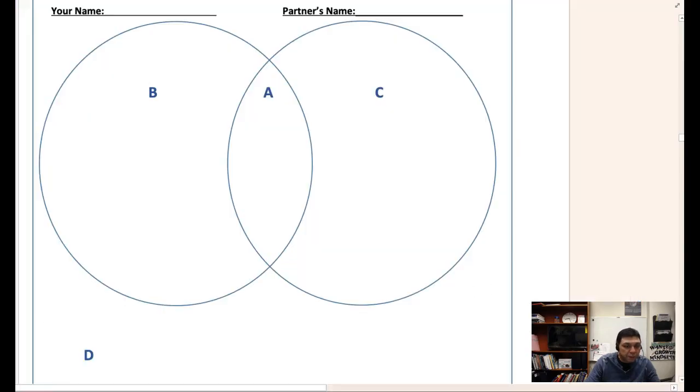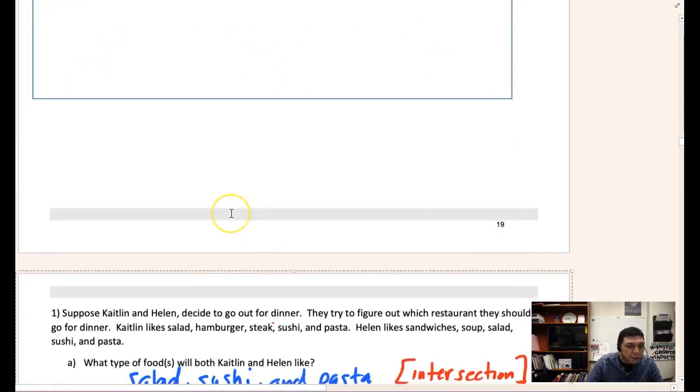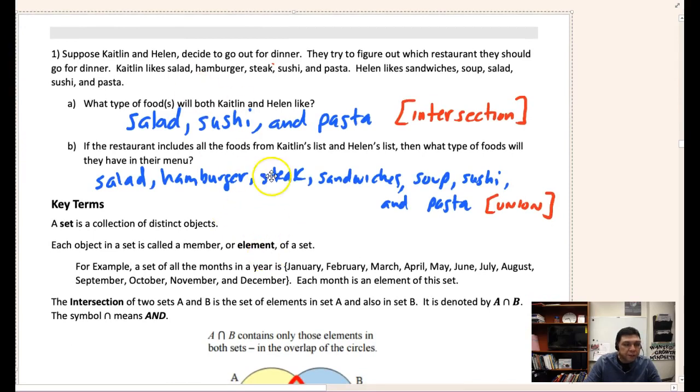Continuing on here, here's a situation without the pictures right now. You have the situation of these two who are going to dinner and they're trying to figure out which restaurant. You can see there's certain foods that Caden likes, certain foods that Helen likes here, and then what types of foods do they both like? You can go ahead and identify those.